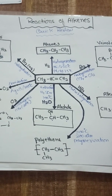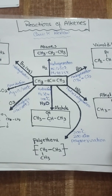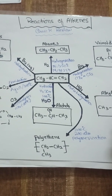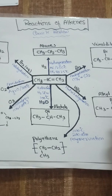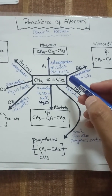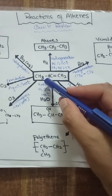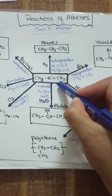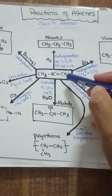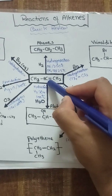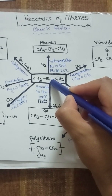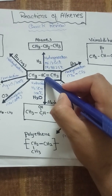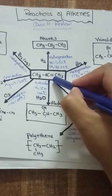Dear students, Assalamualaikum. In this lecture video we are going to take a quick review on reactions of alkenes. Reactions of alkenes are important at intermediate and graduation level. We will take an example of propylene, which is an unsymmetrical alkene, because we can apply Markovnikov's rule in different reactions when we have an unsymmetrical alkene.